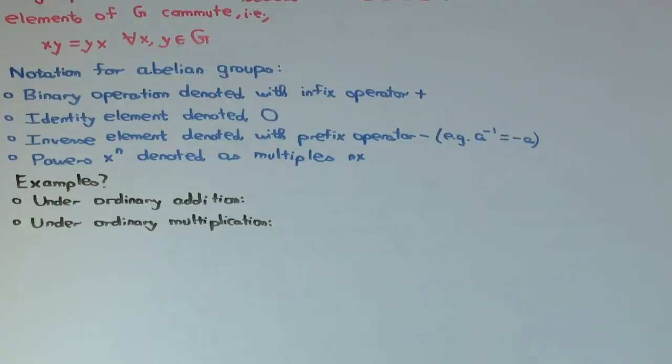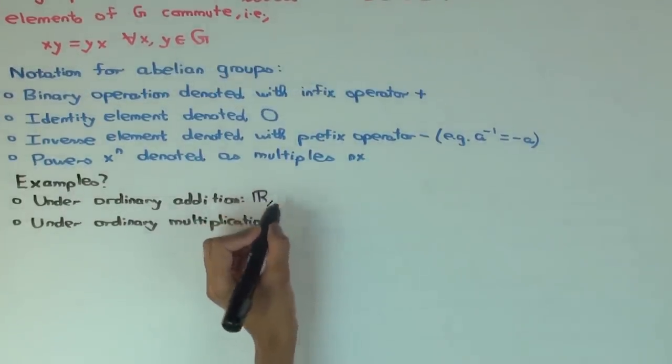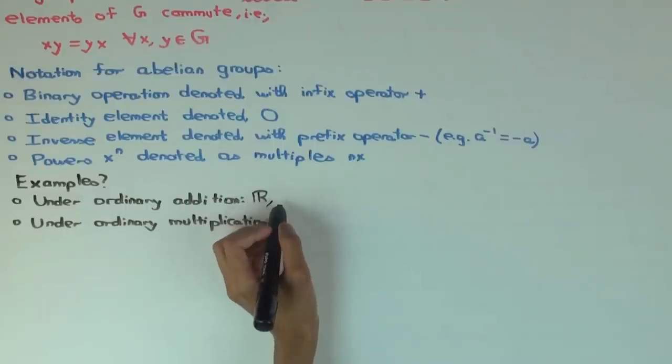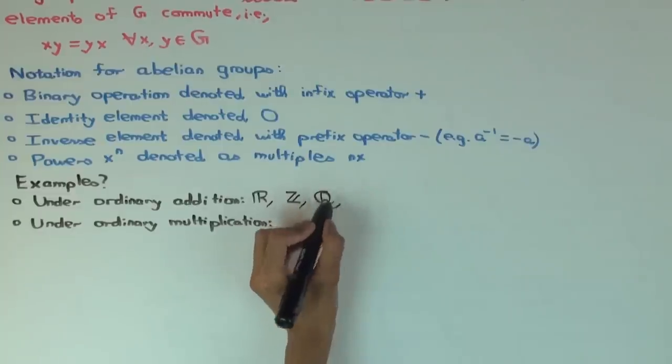Now, what are some examples of abelian groups? Well, let's think of abelian groups where the group operation is actually what you usually think of as addition. What are some examples? Real numbers. What else? Can you think of some subgroups of this, which are things inside the real numbers that are abelian groups? Integers. Anything in between these? Rationals. Right.